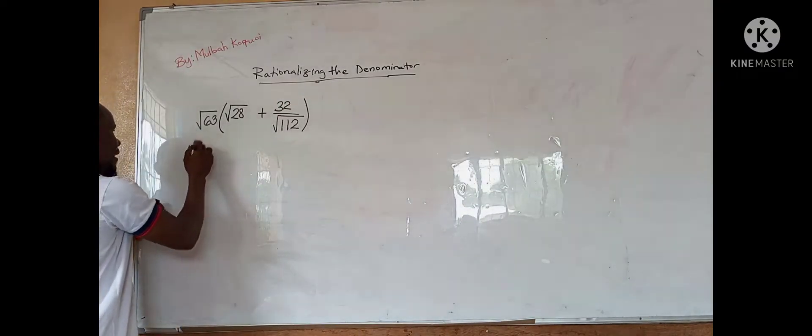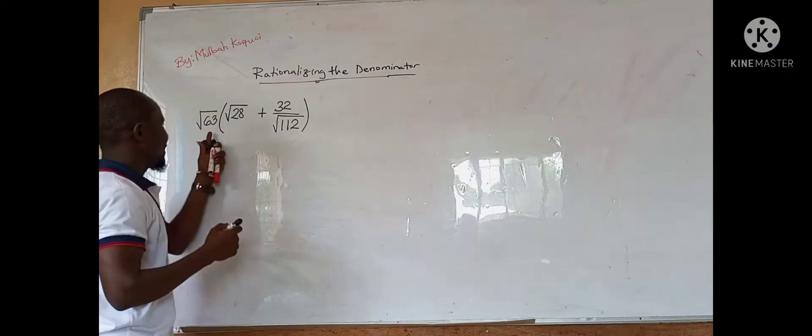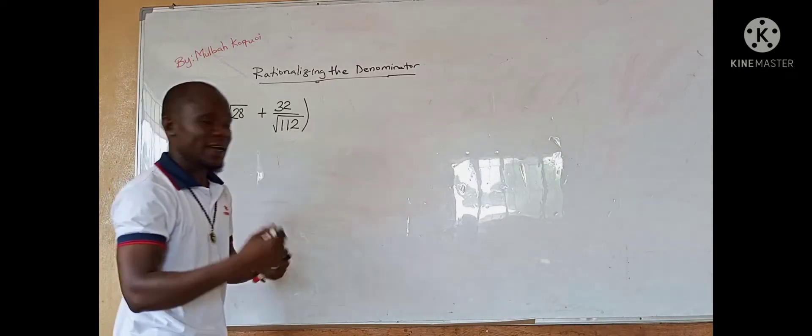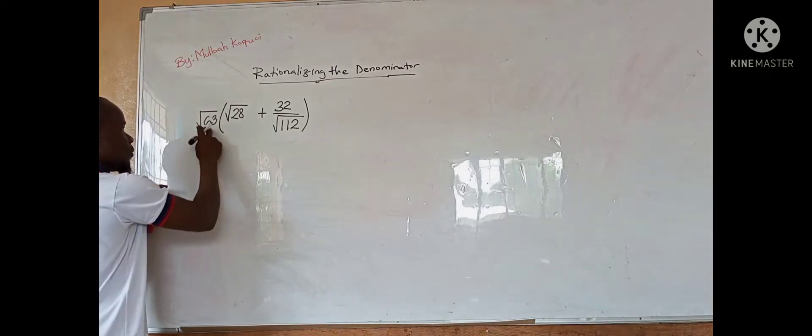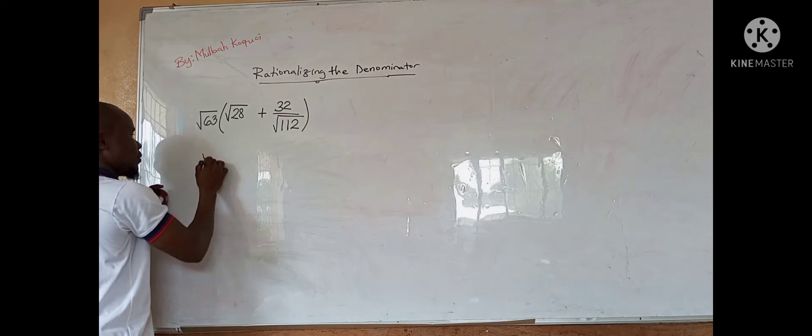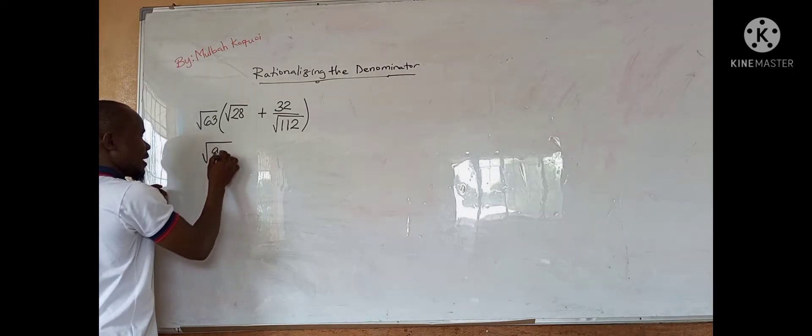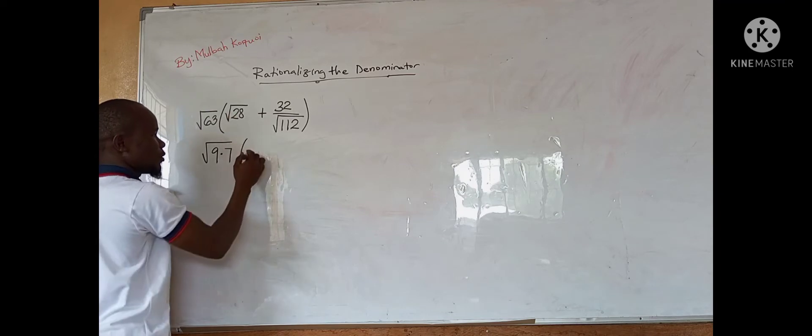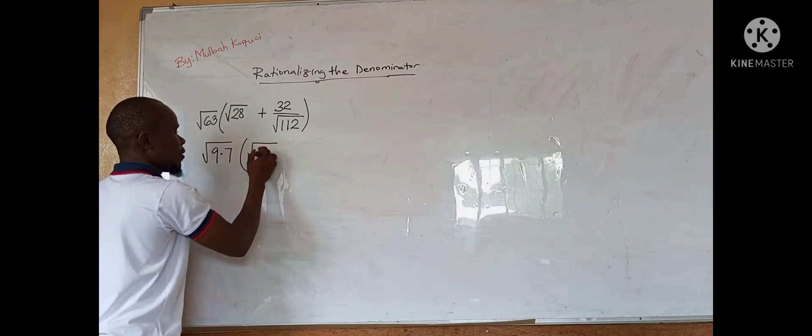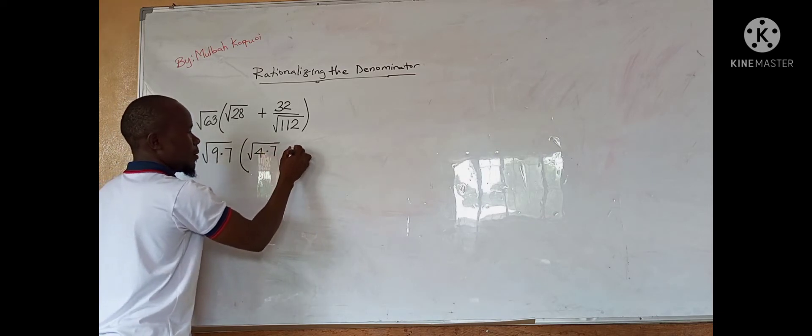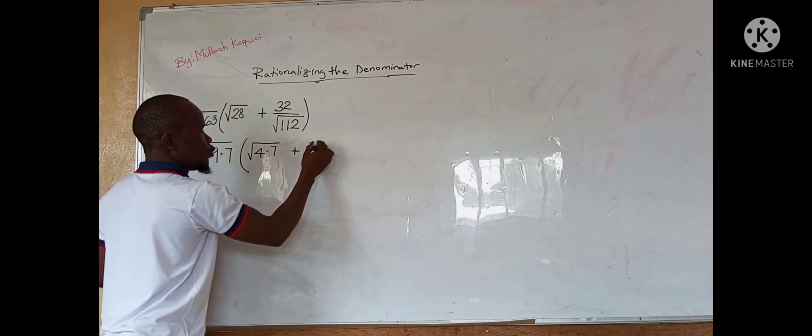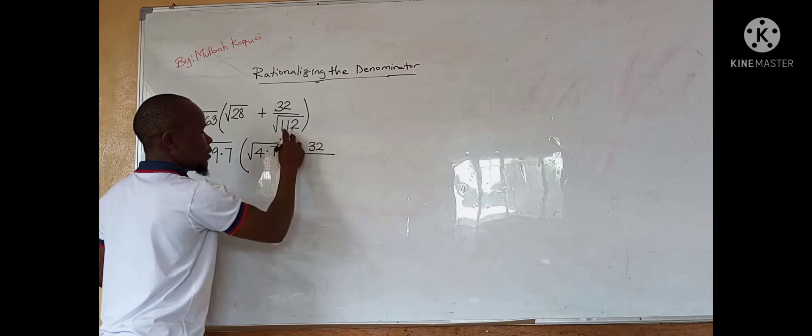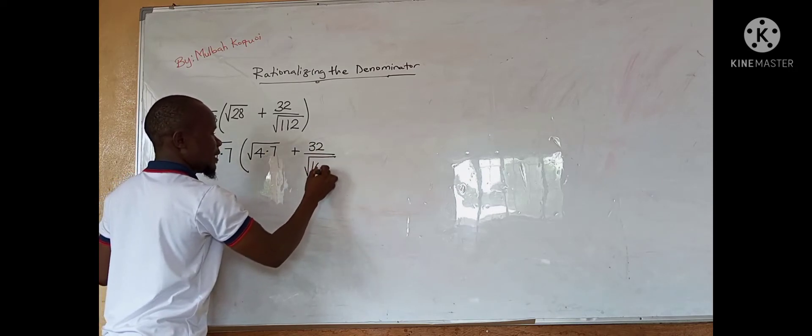So we have here the root of 63. This is not a perfect square, but we can factor out perfect squares from this root of 63, so we have the root of 9 times 7. And this one also, the square root of 4 times 7, plus 32, all over the square root of 16 times 7.